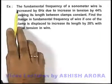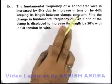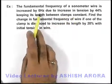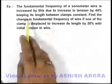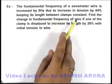In this example, we are given that the fundamental frequency of a sonometer wire is increased by 6 hertz due to increase in tension by 44 percent, keeping its length between clamps constant.